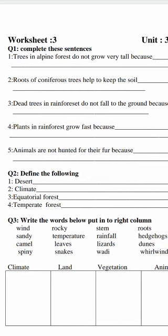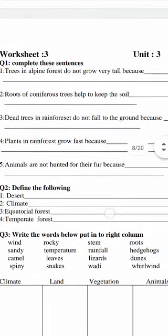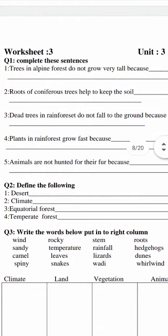Temperate forests are found in North American countries, and conifer trees are found there along with different types of trees. In both forest types, you need to underline which trees are found, what the population is like, and which animals are present. Alpine forests and conifers are found in temperate forests, and both animals and birds are present in them.